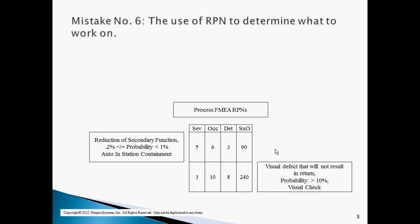The sixth mistake companies make is using RPN to determine what to work on. In the example provided, the severity, occurrence, and detection ratings in the first line of the process FMEA indicate the following. The severity rating of 5 means the process will create an out-of-spec condition resulting in the reduction of a secondary function of the product and consequently its return. The occurrence rating of 6 means the out-of-spec condition may be present in up to 1% of the product. The detection rating of 3 means the out-of-spec condition will be contained in the station that creates it within the process.